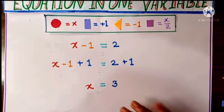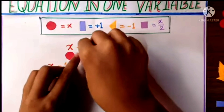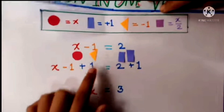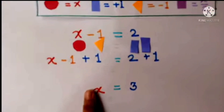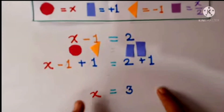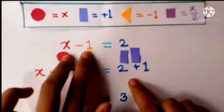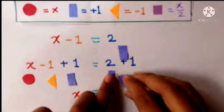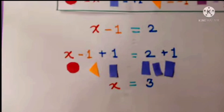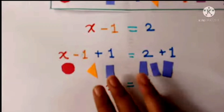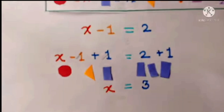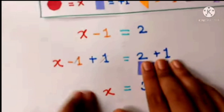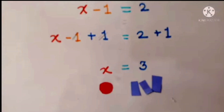Here is our minus equation, our next equation. So here is x minus 1 is equal to 2. The opposite of minus 1 will be plus 1, so on both sides LHS and RHS we have to put plus 1. Let's take this as it is and on both sides put plus 1. Here plus 1 and minus 1 will cut and become 0, so let's remove it. And 2 plus 1 is equal to 3, so x is equal to 3. Our second equation is done.